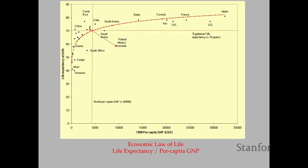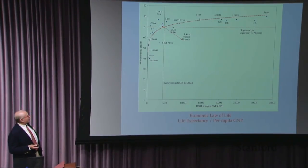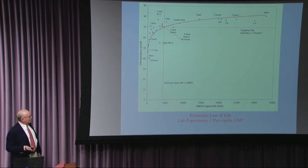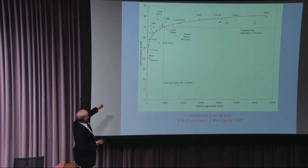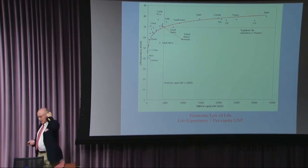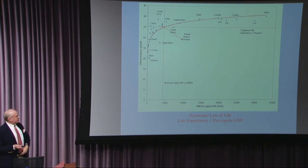If you can read the names of some of the countries way down here where lifespan is fairly short, they're also energy poor. There's a kind of a line at 70 years of life that someone calls the egalitarian energy supply line — somewhat less than we use in the United States — and many other developed countries are on the other side of that line. A very similar graph could be drawn with electrical supply on the horizontal part, so in a way GNP is a stand-in for that.